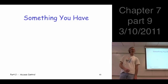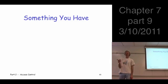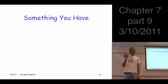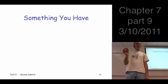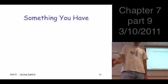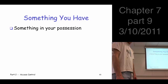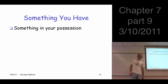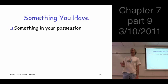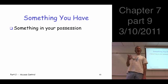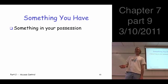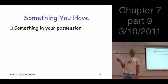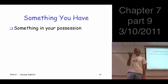Any questions? The last thing here was the something-you-have form of authentication, so something in your possession. Can you think of a real-world example of a something-you-have? A key — a car key, that's a good example. Anything else?